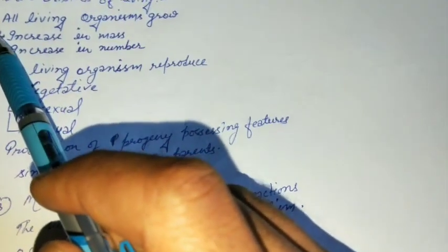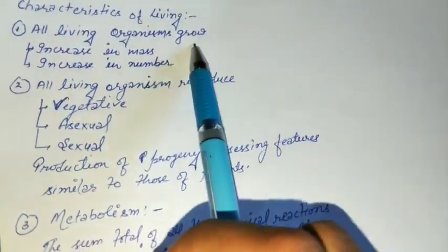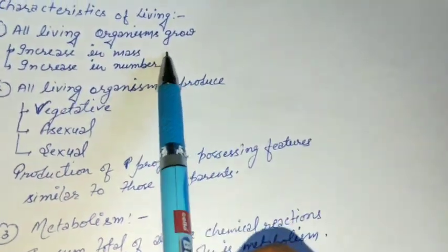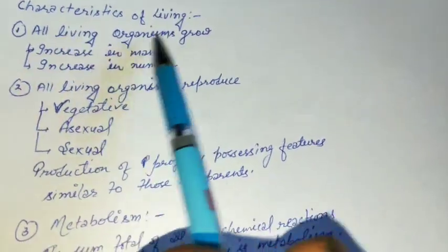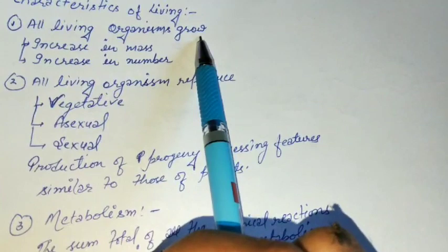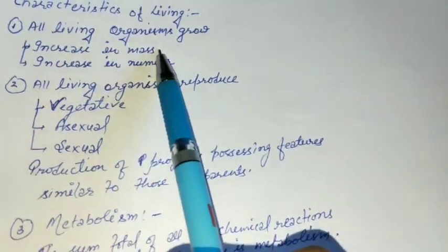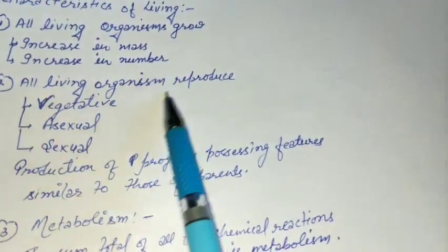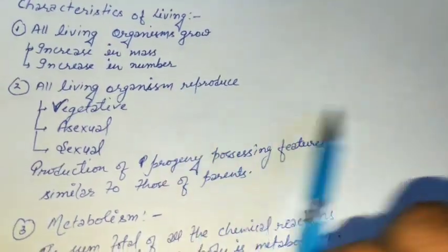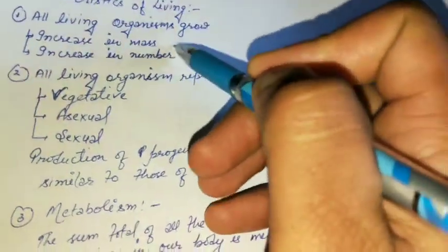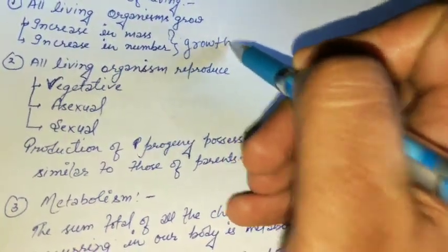The first characteristic is that all living organisms grow. Growth means an increase in mass and an increase in number. These two — increase in mass and increase in number — together constitute growth.